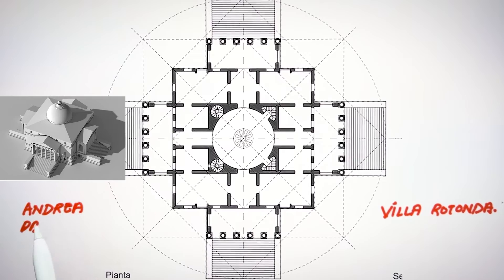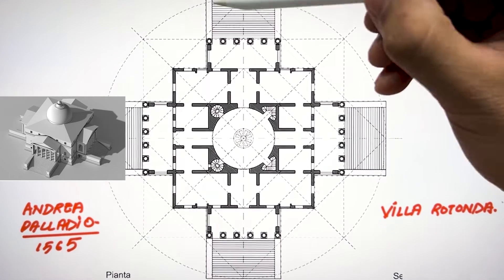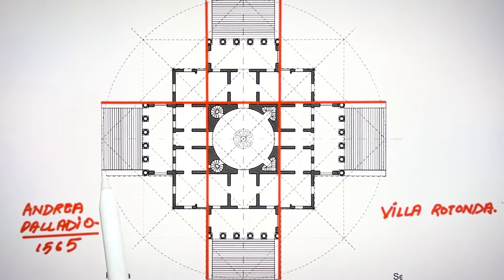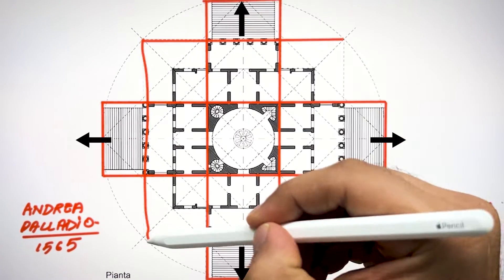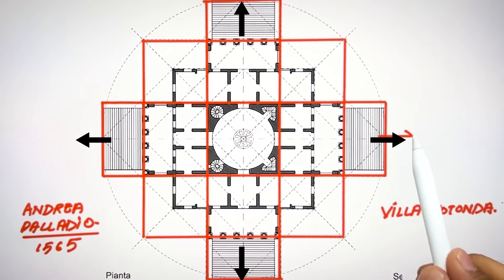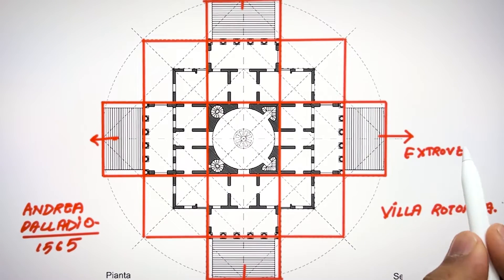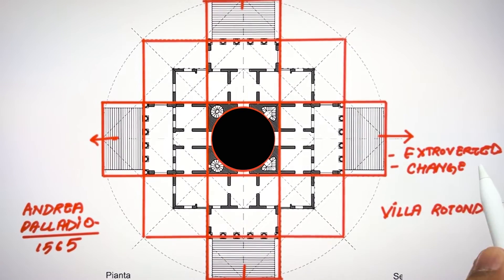The next project was done by Andrea Palladio in 1565, the famous Villa Rotonda, which developed the new era of architecture known as Palladian architecture. Here Palladio used the system of nine grid with the extroverted nature, extending the nine grid outward following the principle of symmetry, and also changing the shape of one grid by adding a circular dome inside it.